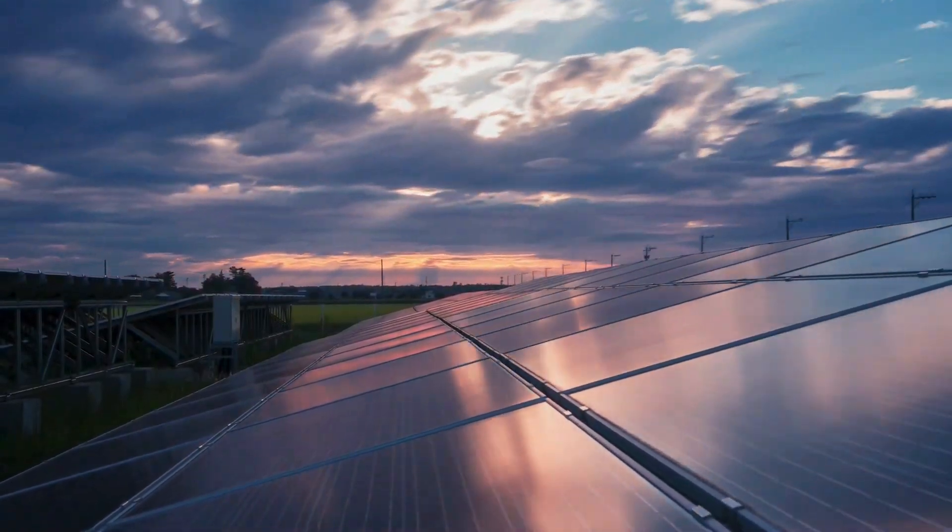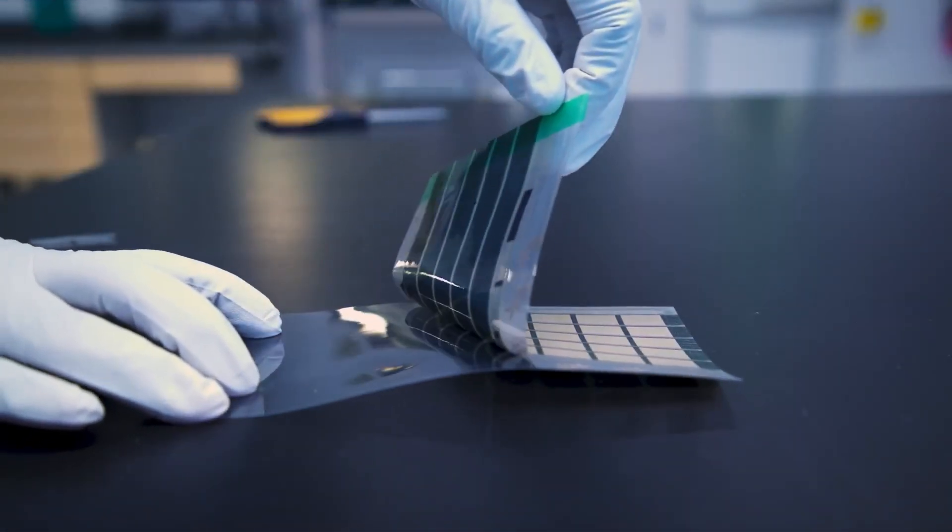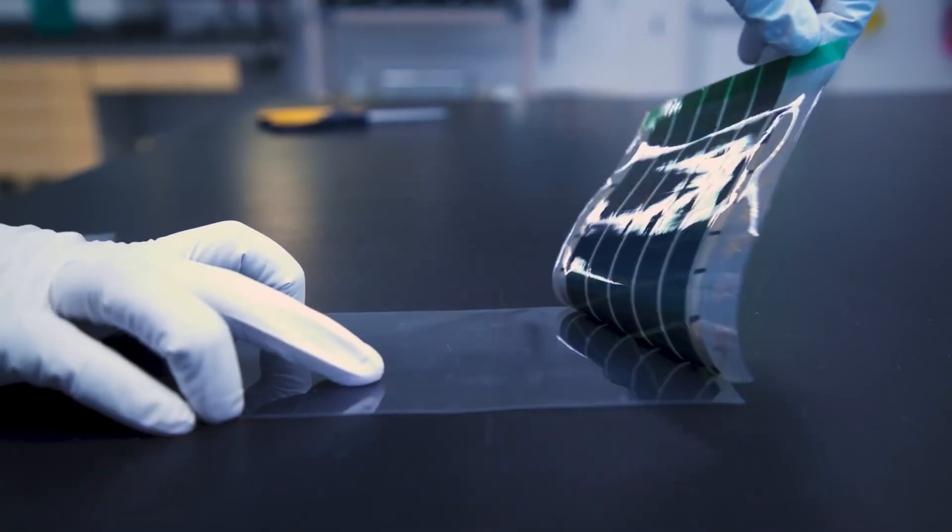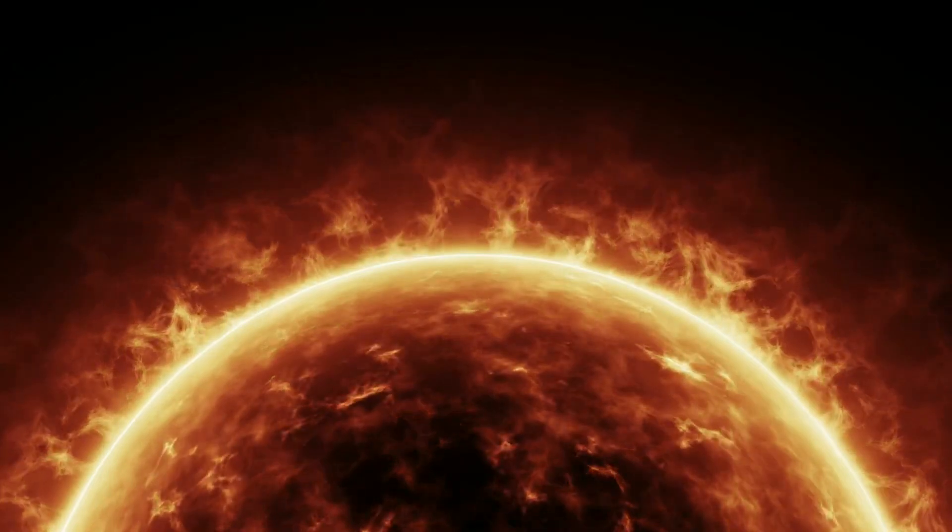In order to address the world's increasing energy needs, polymer-based solar cells have emerged as a possible substitute for conventional silicon solar cells. They are also more cost-effective and less harmful to the environment.